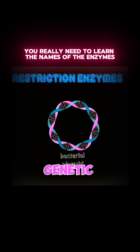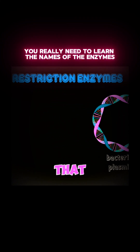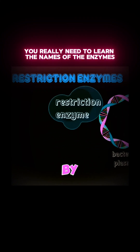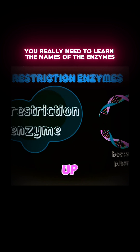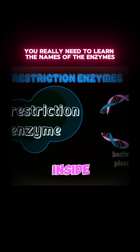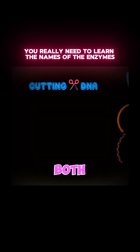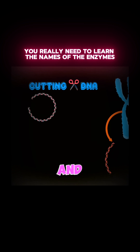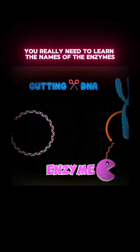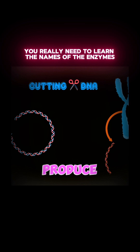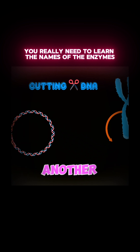The first step in genetic engineering is to take that bacterial plasmid and cut it by using restriction enzymes. Restriction enzymes cut DNA specifically to open it up and insert the human insulin gene right inside the bacterial plasmid. Both the human DNA and the bacterial plasmid must be cut with the same restriction enzyme, because we want to produce DNA that is complementary and can be easily bound to one another.